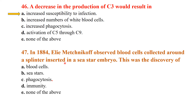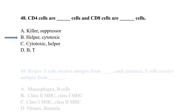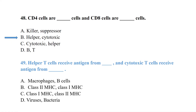Metchnikoff observed blood cells collecting around a splinter inserted in a starfish embryo — this was the discovery of phagocytosis. CD4 cells are helper cells and CD8 cells are cytotoxic cells.